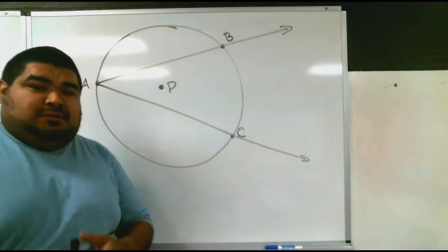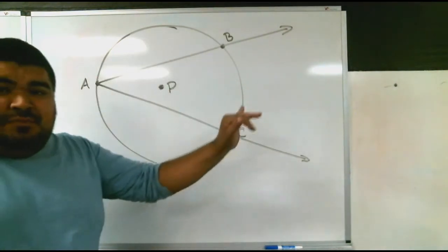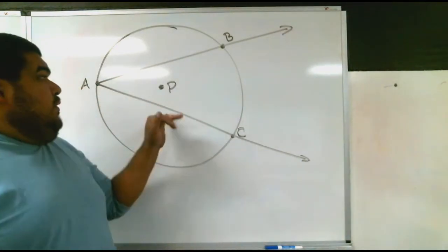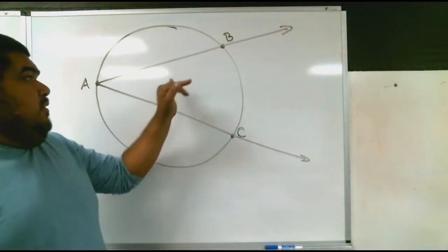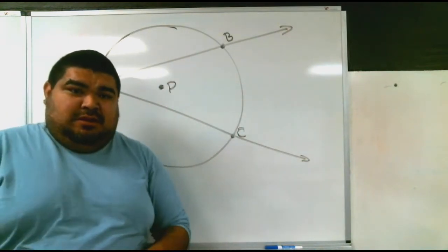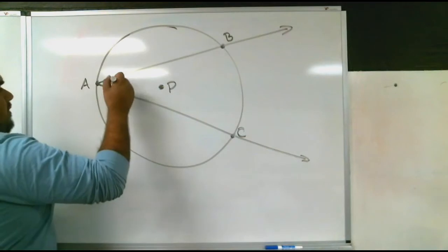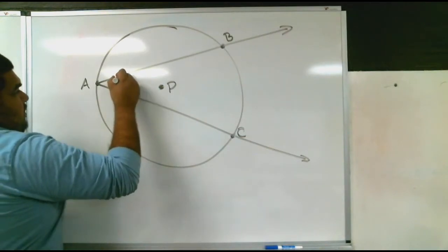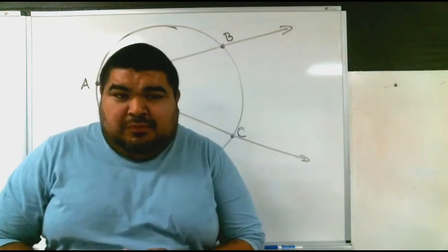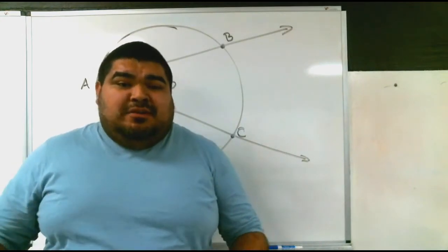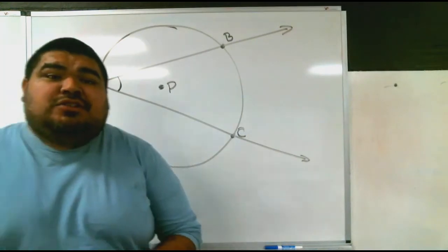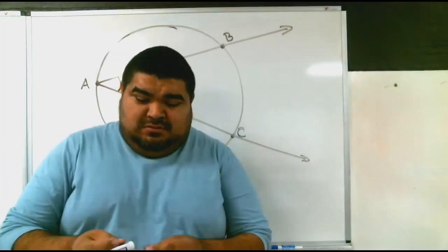When this happens—when you have a circle and you have an angle that is created by two chords, chord one and chord two—it is called an inscribed angle. Angle A is known as an inscribed angle. The way we find the measurement of this angle, there is a specific equation we have to use.